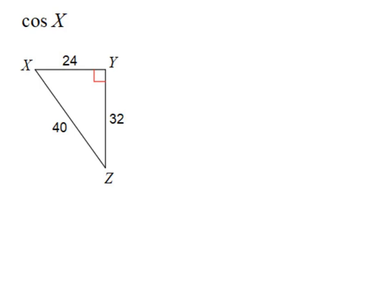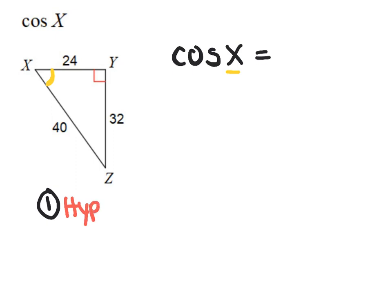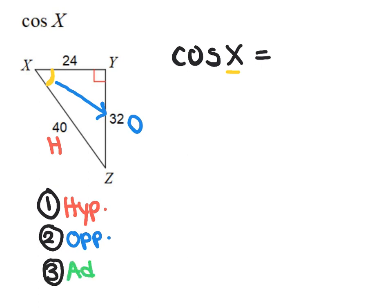For this problem, it is asking us for cosine of X. So if I rewrite it, cosine of X equals — the angle we're talking about is angle X, so I'm going to mark that on my diagram. If I label my sides, I'm first going to label the hypotenuse, which in this case is the 40, the opposite, which is across from the reference angle — so in this case it's the 32 — and then lastly the adjacent, which in this case would be the 24.